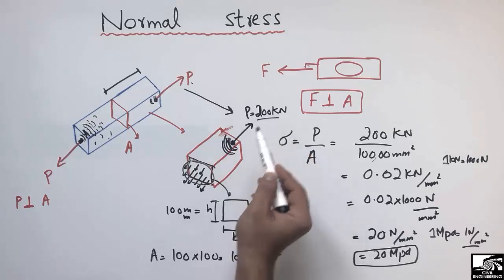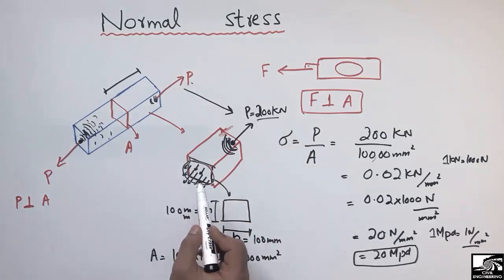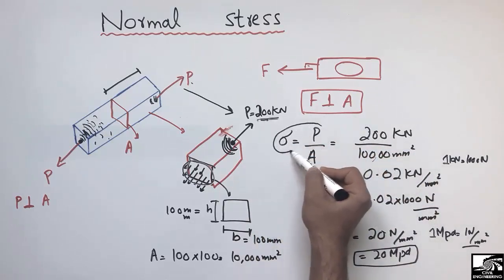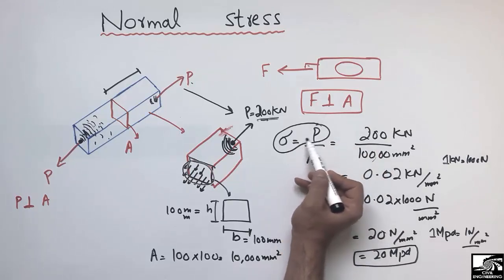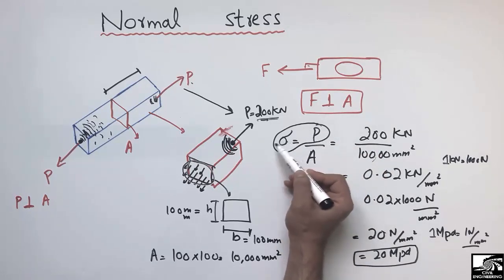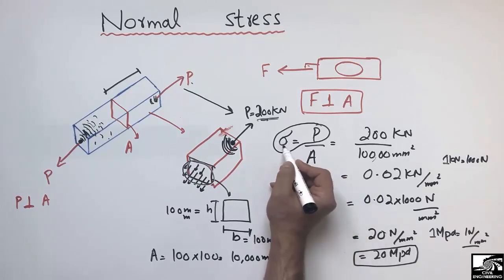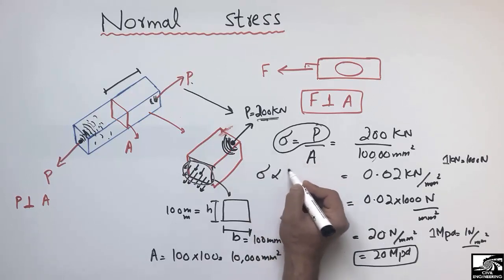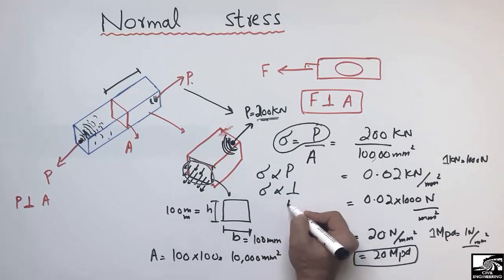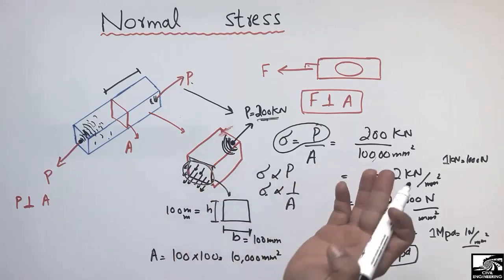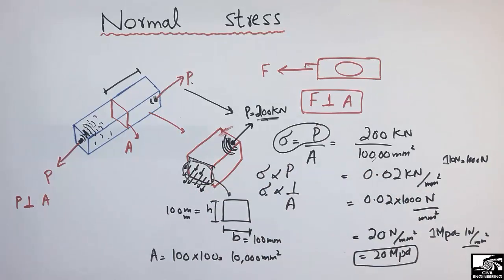So 20 MPa of stress is created due to a load of 200 kN with a cross-section of 100 mm × 100 mm. If you increase the force, stress increases — stress is directly proportional to force. If you reduce the area, stress also increases — stress is inversely proportional to area. This lecture will continue in the next video, which will cover stresses in different cross-sections of a member.